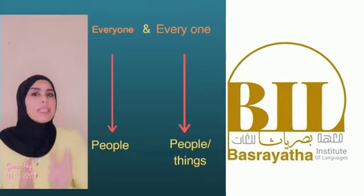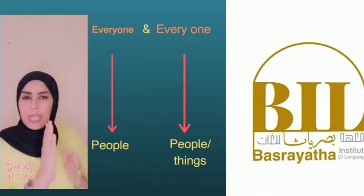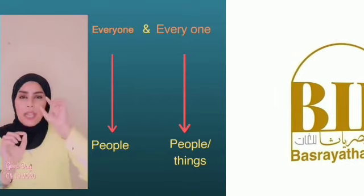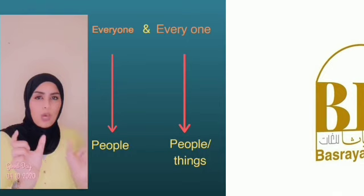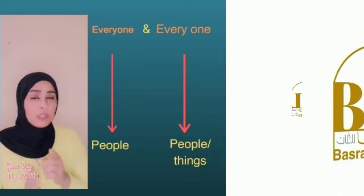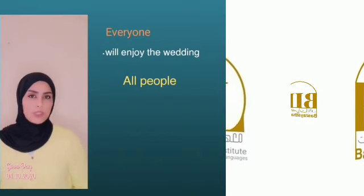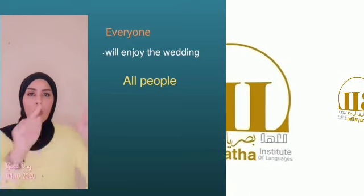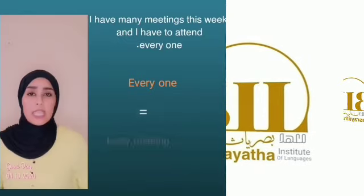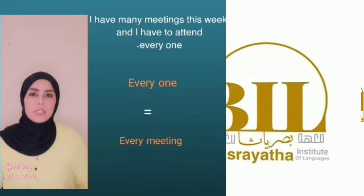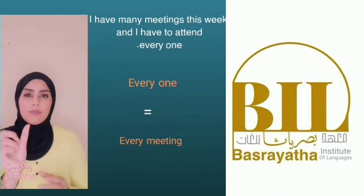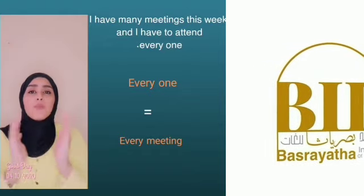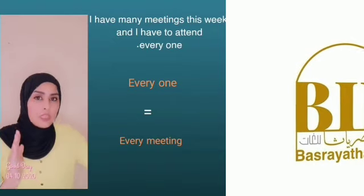Along with 'each one' and 'everyone,' some people use 'everyone' as one word and 'every one' as two words in the wrong way. Actually, 'everyone' as one word is used for people, while 'every one' as two words is used for people and things. For example: 'Everyone will enjoy the wedding' — meaning all people at the party. But: 'I have many meetings this week and I have to attend every one' — meaning every meeting. Here you can't use 'everyone' as one word because you're talking about things.